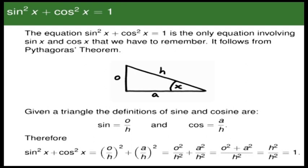That's opposite over hypotenuse squared plus adjacent over hypotenuse squared — so that's o² over h² plus a² over h². Taking a common denominator, we end up with o² plus a² on top and h² on the bottom. You'll notice that o² plus a², by Pythagoras' theorem, equals h². So we end up with h² over h², which of course equals 1.